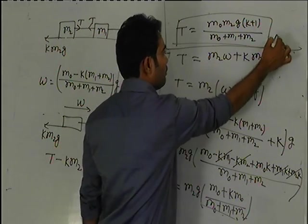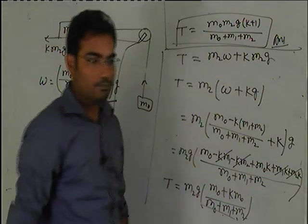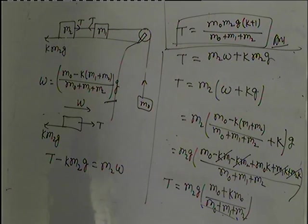This is the final result. The value of tension between M1 and M2 is M0 into M2G(K plus 1) by M0 plus M1 plus M2. This is the problem.